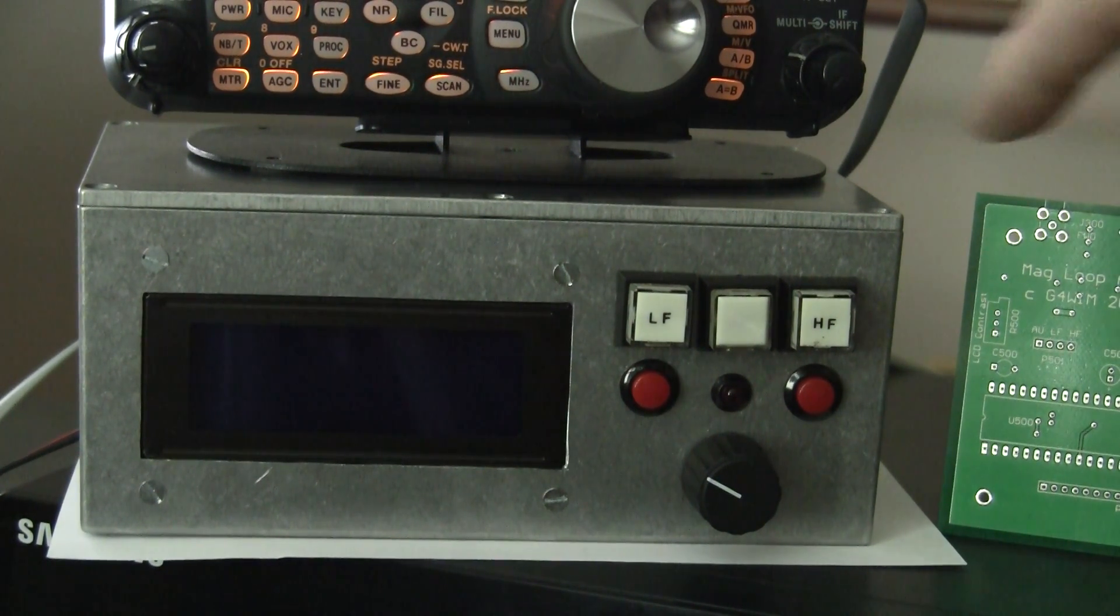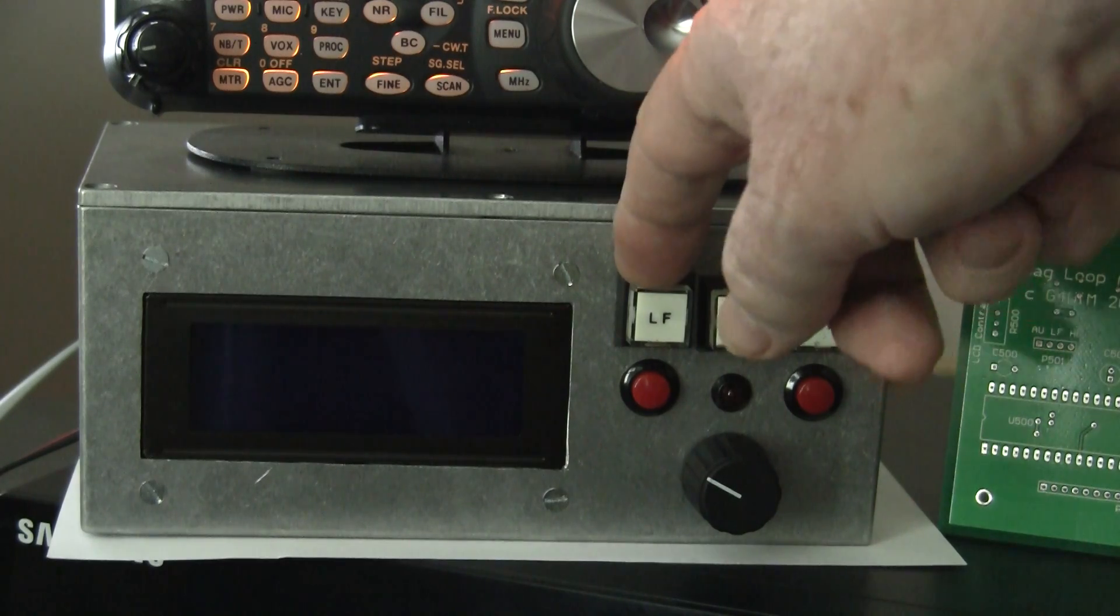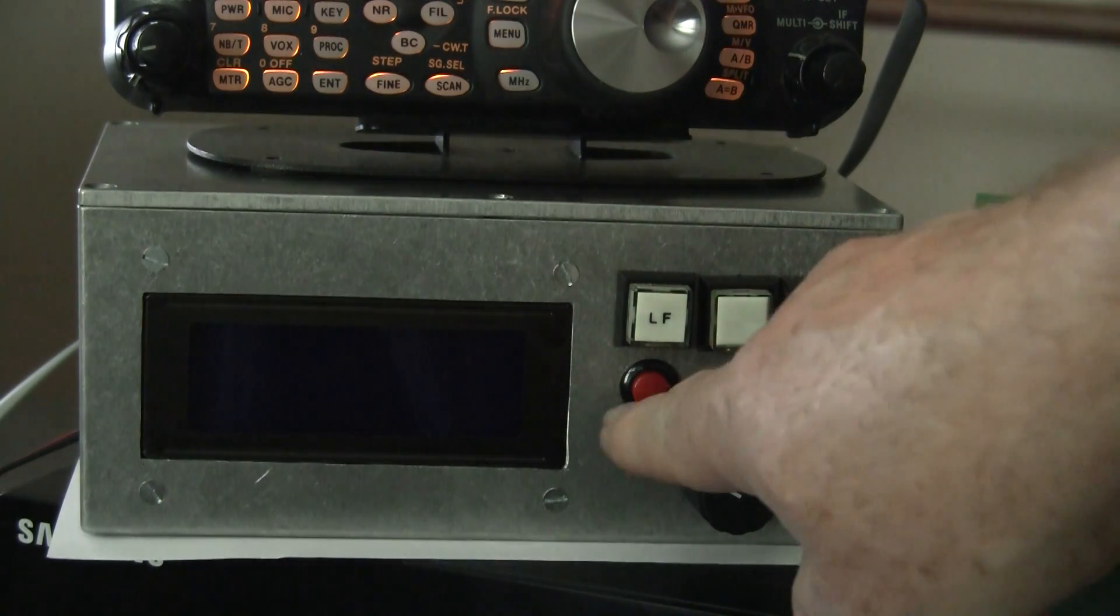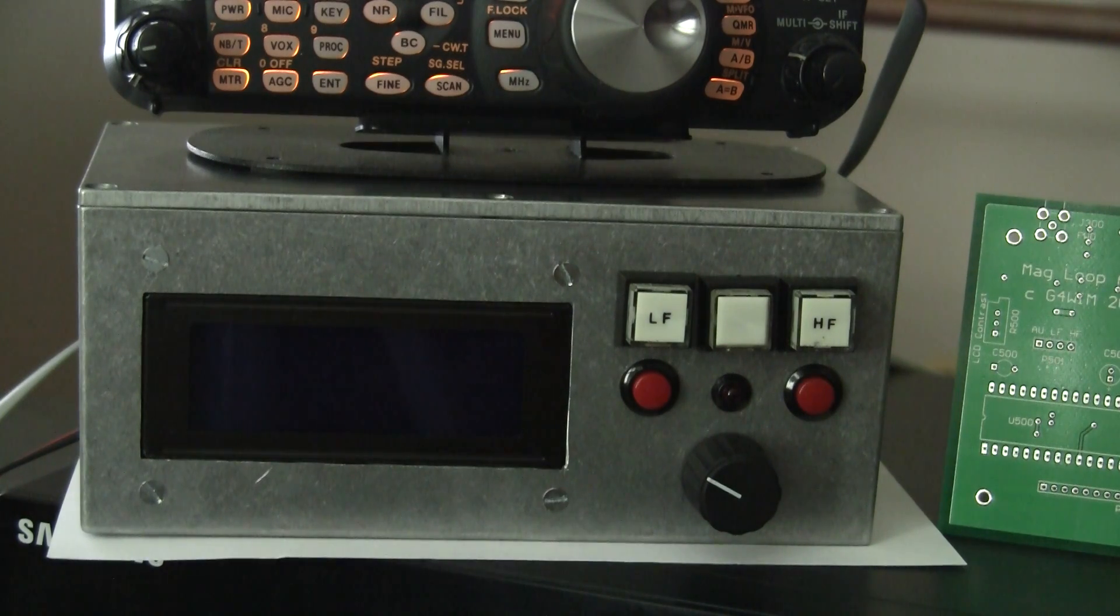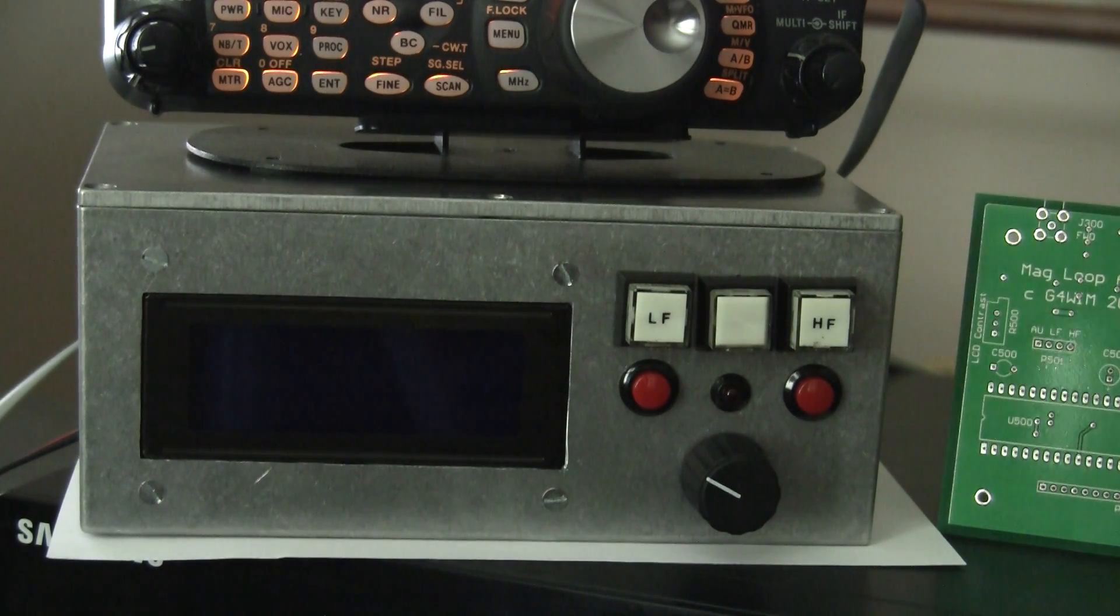As before we've got manual buttons for tuning the loop, LF and HF, but now we've got these other two buttons here which actually allow us to motor the coupling loop in and out if we so desire.